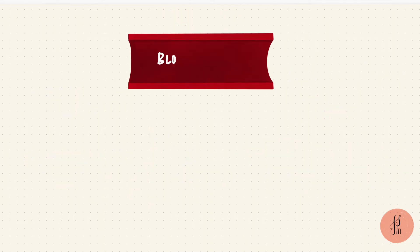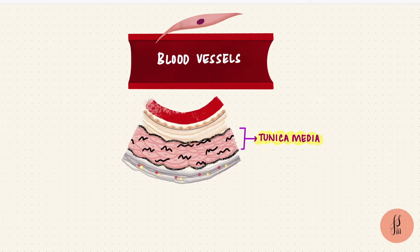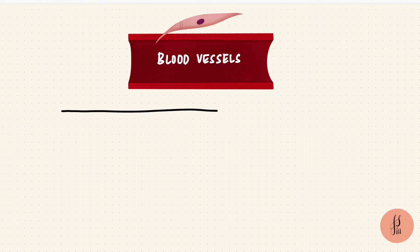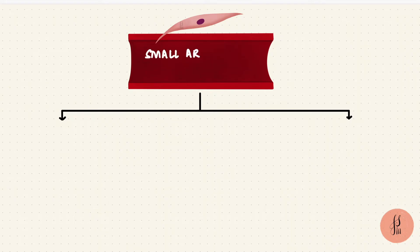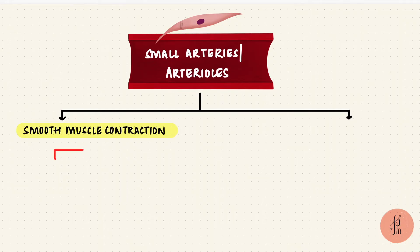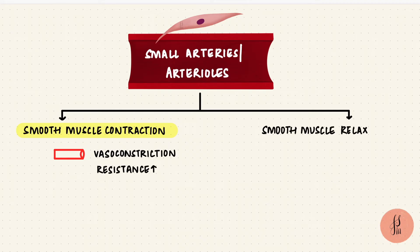Blood vessels also have smooth muscles in their wall. They form a part of the tunica media in the vessel wall. They can regulate the diameter of these vessels by constricting or dilating them, which can change the resistance of the vessels to blood flow. When smooth muscles in the walls of small arteries and arterioles contract, the vessels constrict, meaning the diameter reduces and the resistance increases. If these muscles relax, the vessels dilate, the diameter increases, and the resistance reduces.